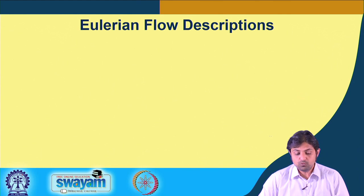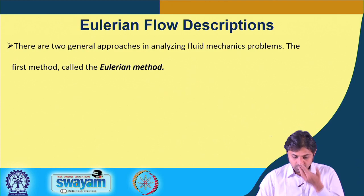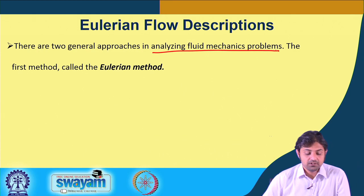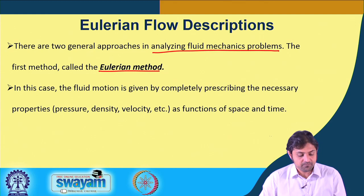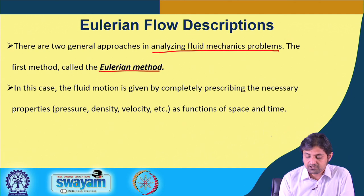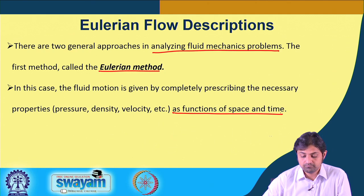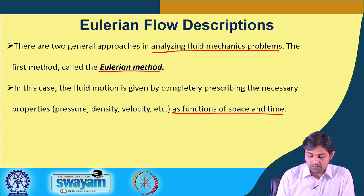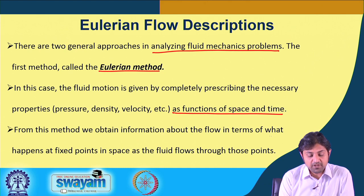There are certain descriptions of flow. The two most famous are Eulerian and Lagrangian. In the Eulerian method, the fluid motion is given by completely prescribing the necessary properties as a function of space and time. From this method, we obtain information about the fluid flow in terms of what happens at fixed points in space as the fluid flows through those points.